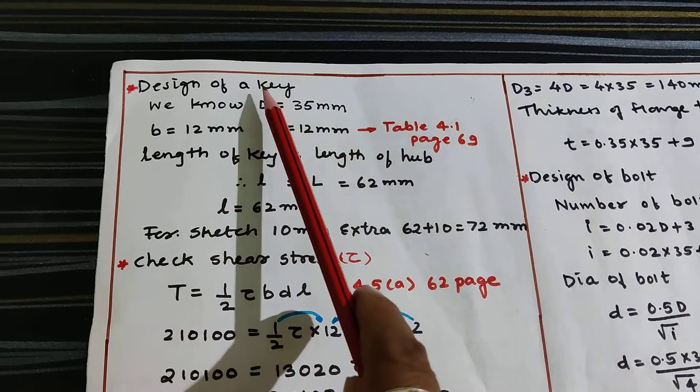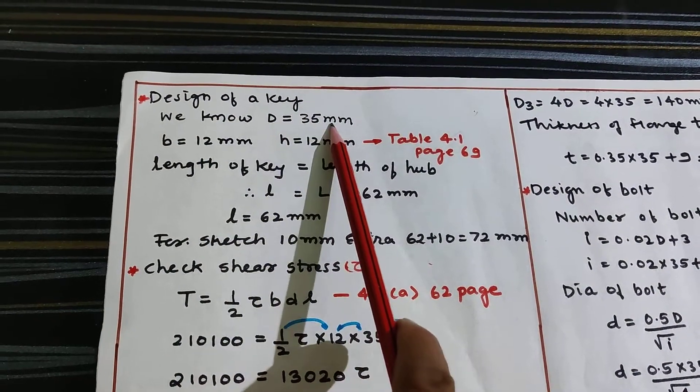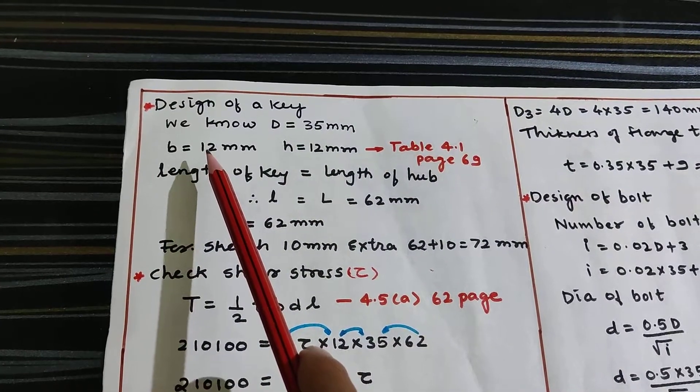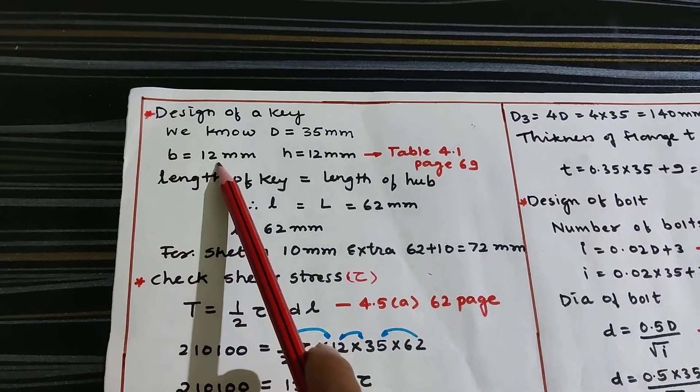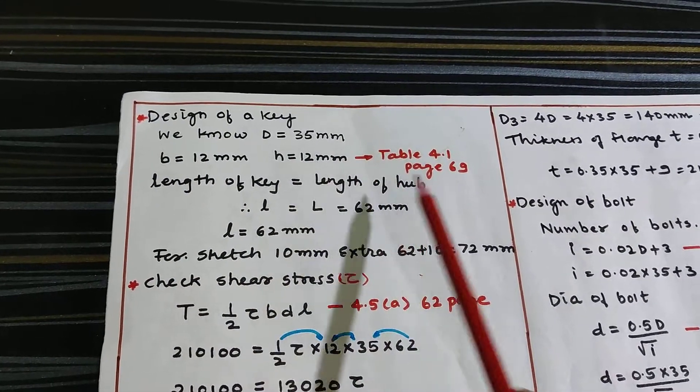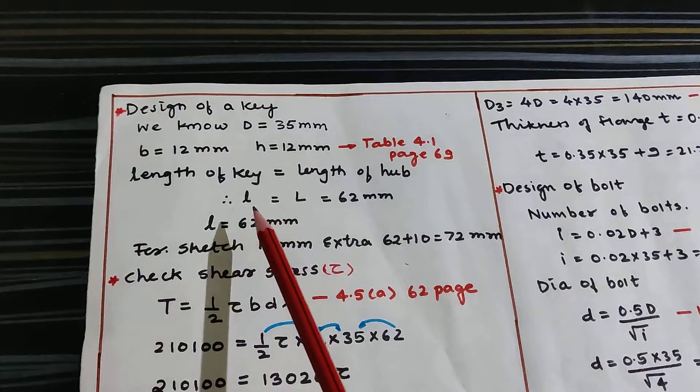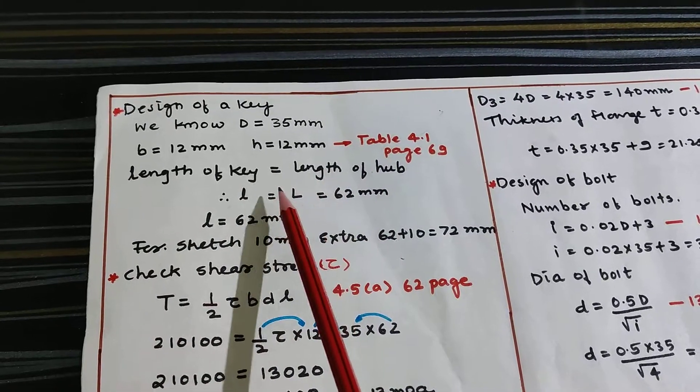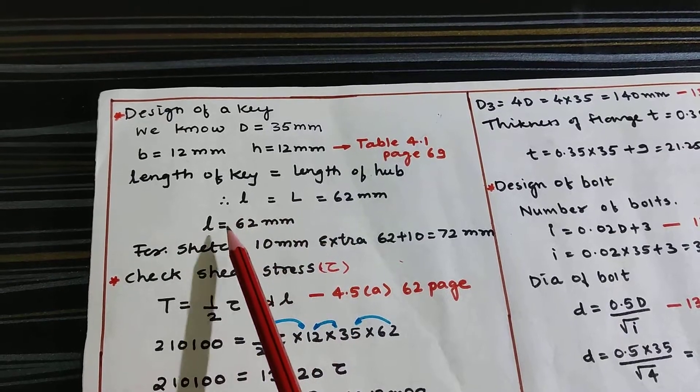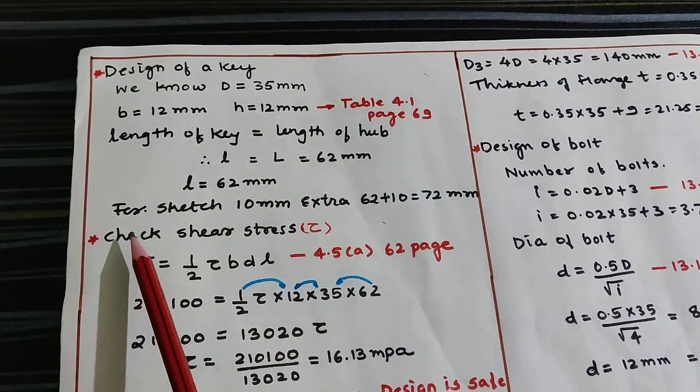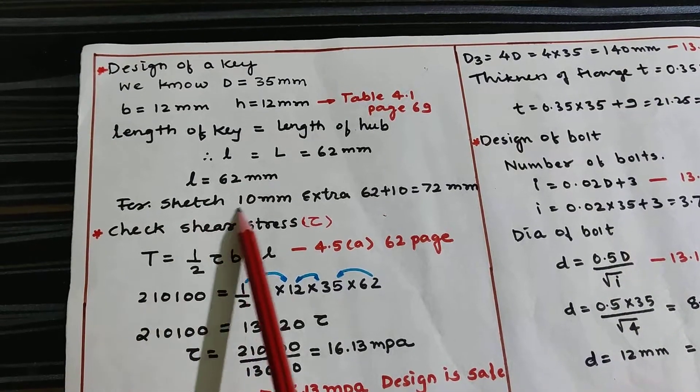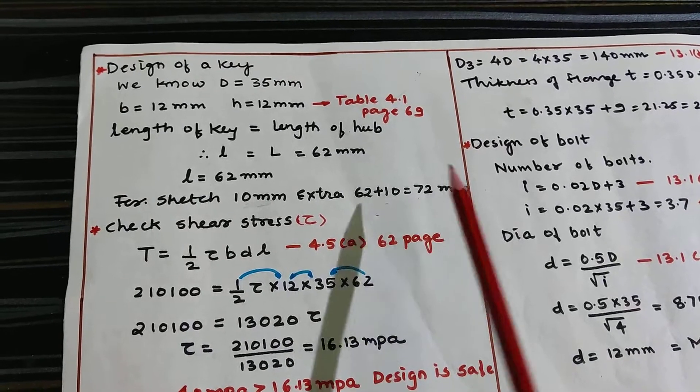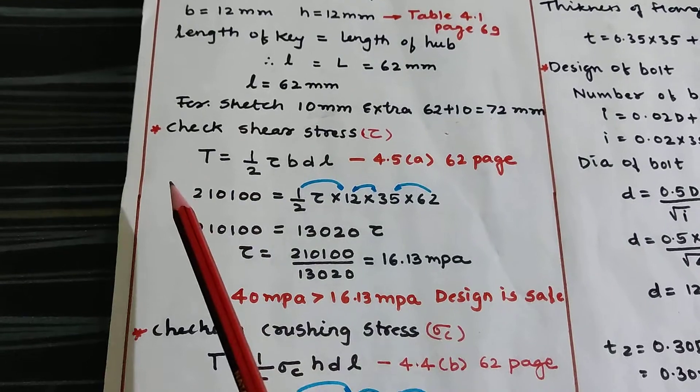Now next, design of key. Diameter is 35 mm. I will go to table number 4.1 page number 69, considering this as a square key. Breadth is 12 mm and height is also 12 mm from table 4.1 page 69. Length of the key is equal to length of the hub, so L = 62 mm. For part drawing, just add 10 mm extra for the key length: 62 + 10 = 72 mm.